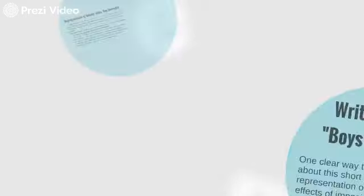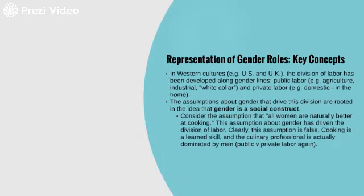When we talk about gender, we can think about a couple key concepts. In Western cultures — the United States, Canada, the UK — the division of labor has often been developed along gender lines. Public labor includes agriculture, industry, white collar jobs, going out into the world to a job. Private labor is domestic work in the home: cooking, laundry, cleaning, childcare. That division of labor has happened along gender lines. The assumptions about gender that drive that division are rooted in this idea that gender is a social construct. For example, the assumption that women are naturally better cooks is false, because cooking is a learned skill. But that idea has driven this division of labor. In fact, when we talk about cooking as a profession — public labor — it is dominated by men. So again, it's a learned skill. Those assumptions are driven by this idea that gender is a social construct.